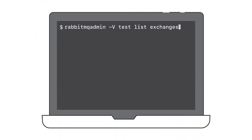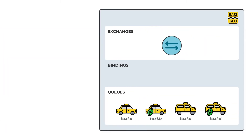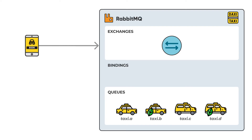In RabbitMQ there are four main types of exchanges: direct, topic, fanout and headers. Existing exchanges and types can be seen in the management interface or through RabbitMQ admin. We will use an example from a taxi company to explain the different exchange types. Every request for a taxi is made through an app that communicates with an application service that uses RabbitMQ.